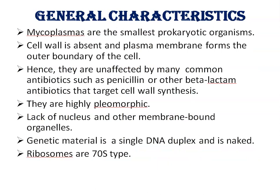Mycoplasmas are the smallest prokaryotic organisms. Cell wall is absent; the plasma membrane is present and forms the outer boundary of the cell. Because no cell wall is present in mycoplasma, they are unaffected by many common antibiotics such as penicillin or other beta-lactam antibiotics, because these antibiotics mainly target cell wall synthesis. Mycoplasmas are highly pleomorphic because no rigid cell wall is present around the cell.